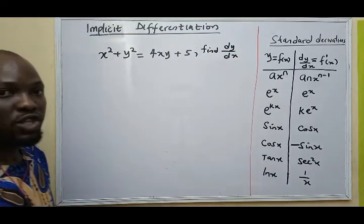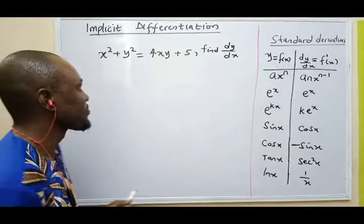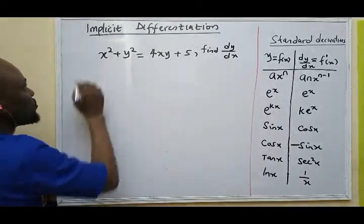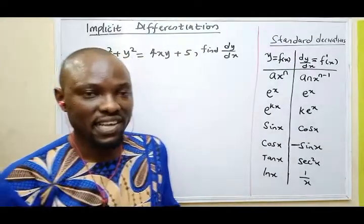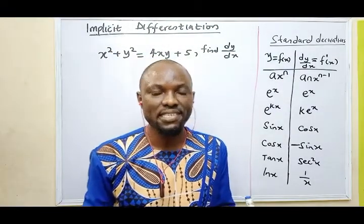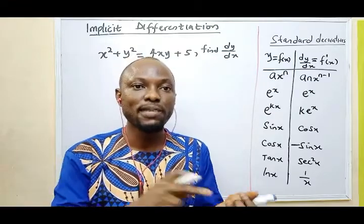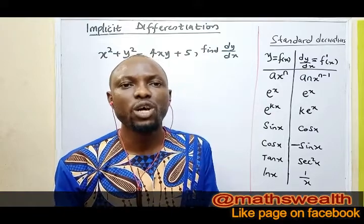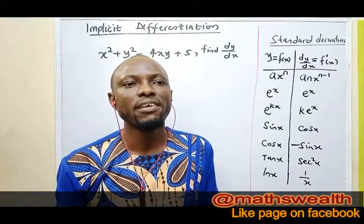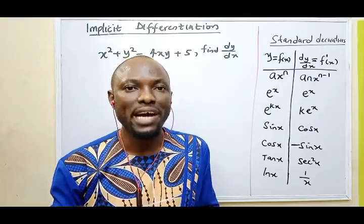I know that I'm going to solve this problem implicitly. In implicit differentiation, I have x and y together. An easy way to do this is we are going to differentiate with respect to x and we'll differentiate with respect to y. Each time we differentiate with respect to y, always multiply your result by dy/dx.